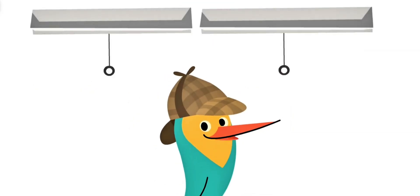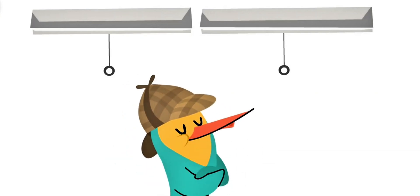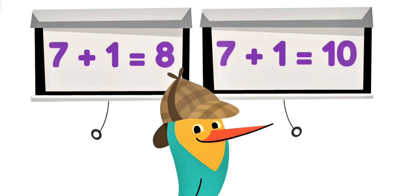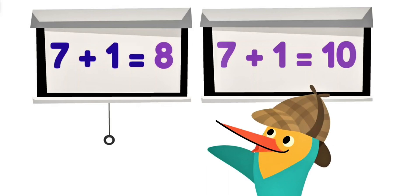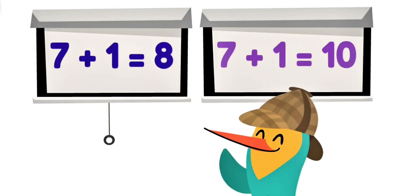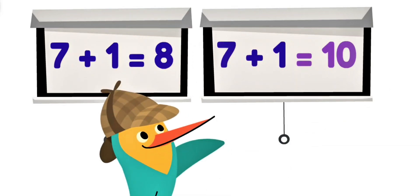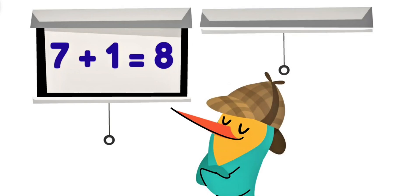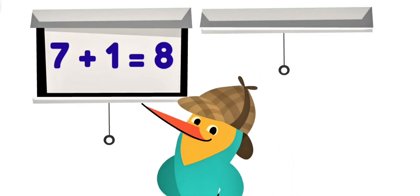True means something is right and correct! False means something is wrong and incorrect! Can you spot which one is true and which one is false? Seven plus one equals eight! Yes! That's true! Seven plus one equals ten! That's not right! We found the one that is false! Good work, detective!